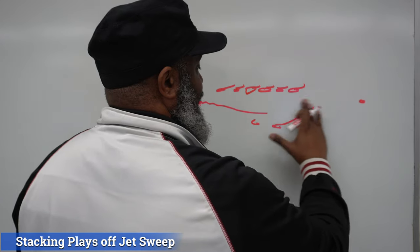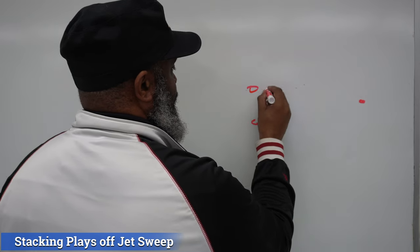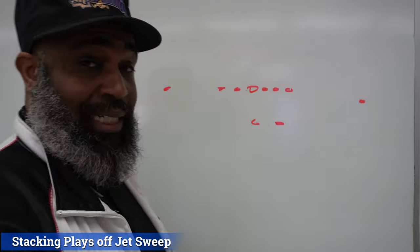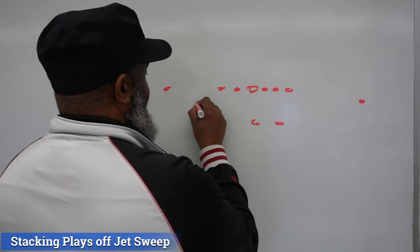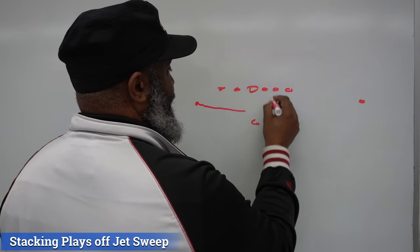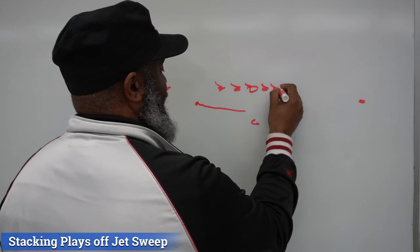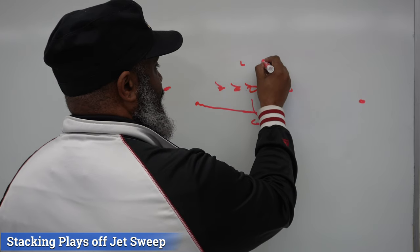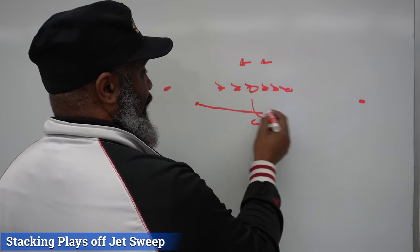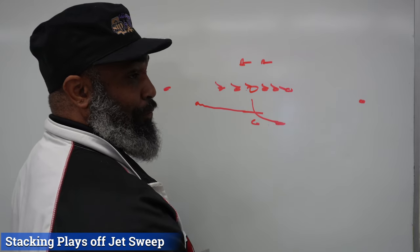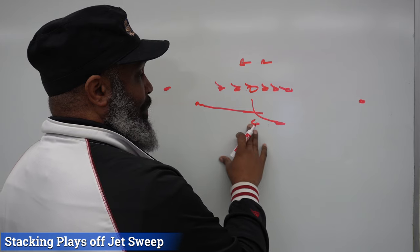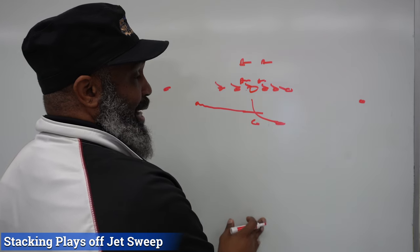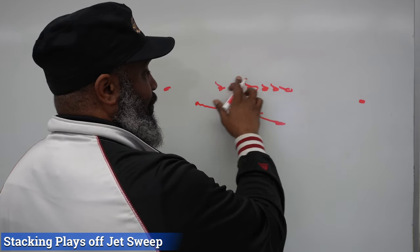Let's take that same concept and see how we can run it different ways. The second play: you fake the jet sweep and run inside zone. Get this guy coming in motion, he'll take a counter step, and they'll just run inside zone to the backside. You fake the jet sweep, get a counter step, come right off it and run inside zone. You'll get your linebackers potentially flowing that way because of the motion. When these guys come in motion, the defenders may bump over the gap, and now you'll create a running lane for your inside zone. That's one way to build off of jet sweep.